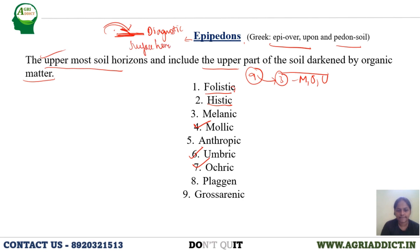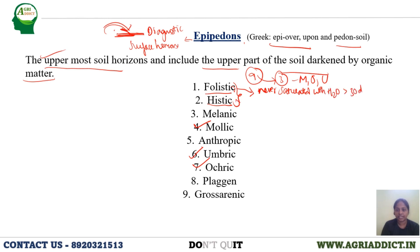Folistic epipedons are never saturated with water for more than 30 days. Histic epipedons, on the other hand, are saturated with water for more than 30 days — this is the main distinguishing difference. Histic means organic matter rich, and folistic contains some organic material, usually sphagnum fibers.